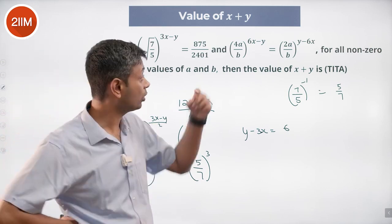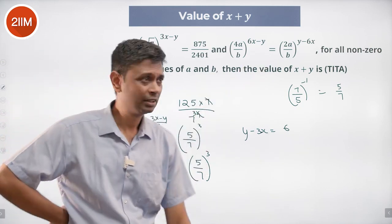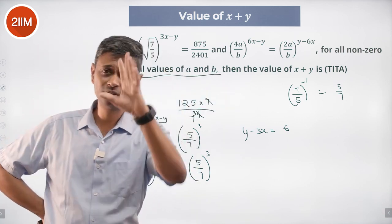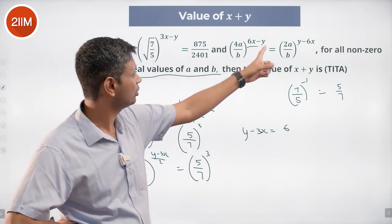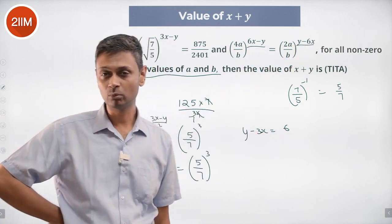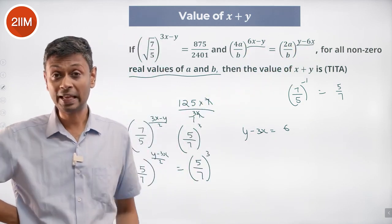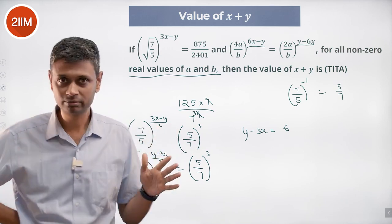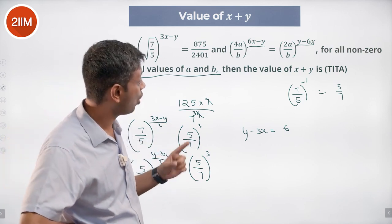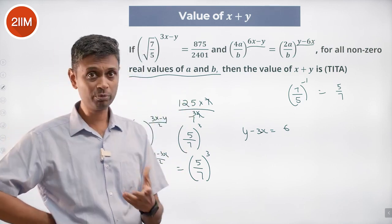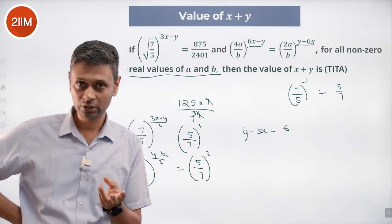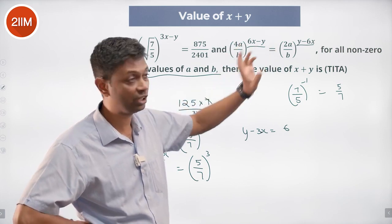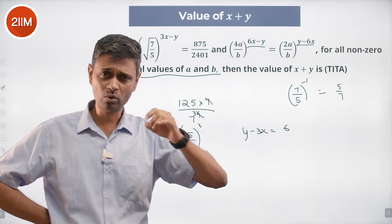This question I got confused because there is a 4a by b here and a 2a by b here. But this says for all non-zero real values of a and b. All values is equal, so this should be 0, this should be 0. Therefore anything power 0 is anything power 0. For all values of non-zero values of a and b, there is going to be an a and b remaining. Even if I put a and b in some form, the power to be equal, there is a 4 and 2 remaining. Only thing that will work is 0.